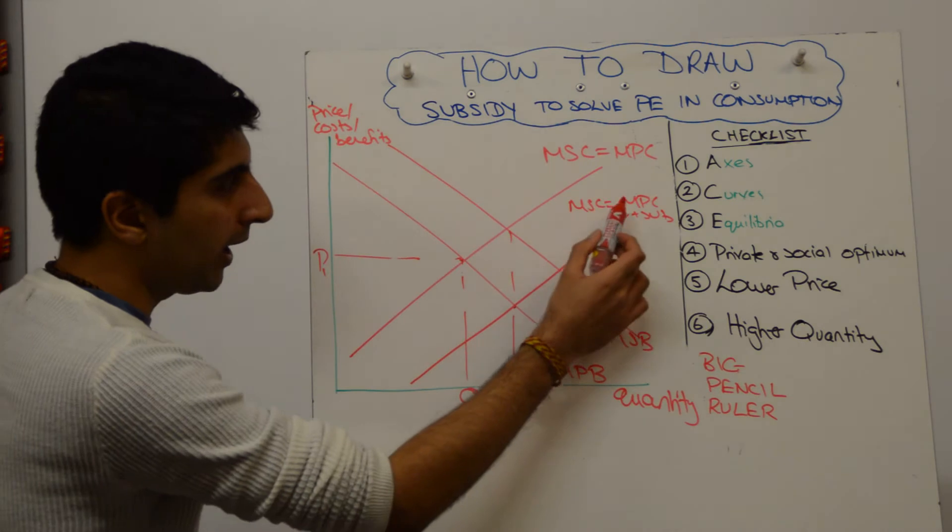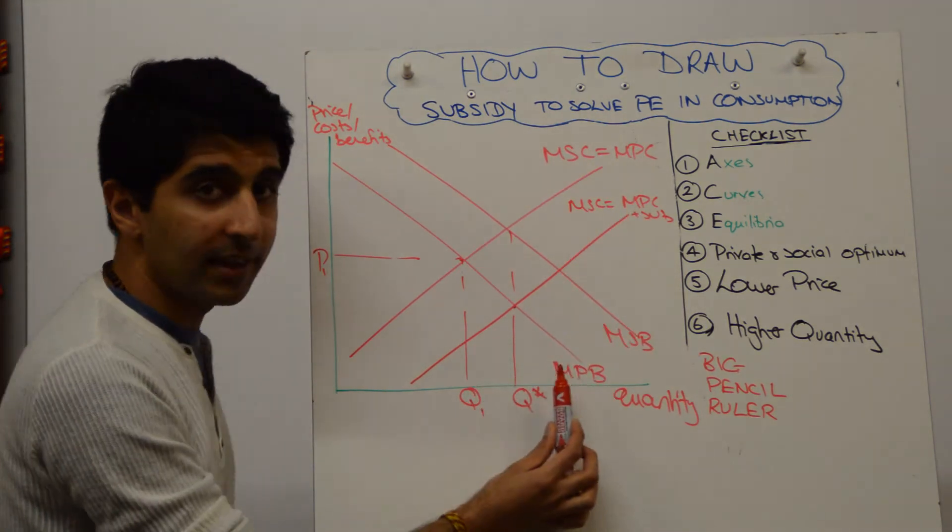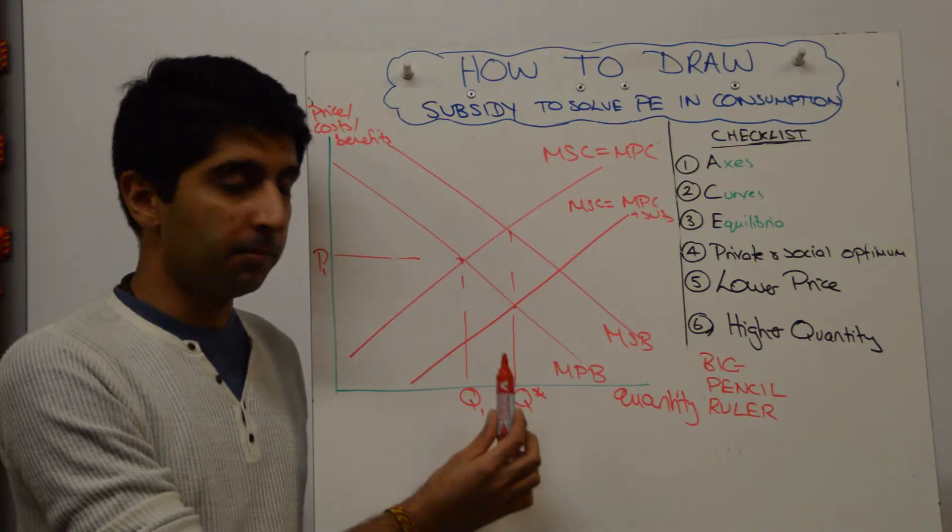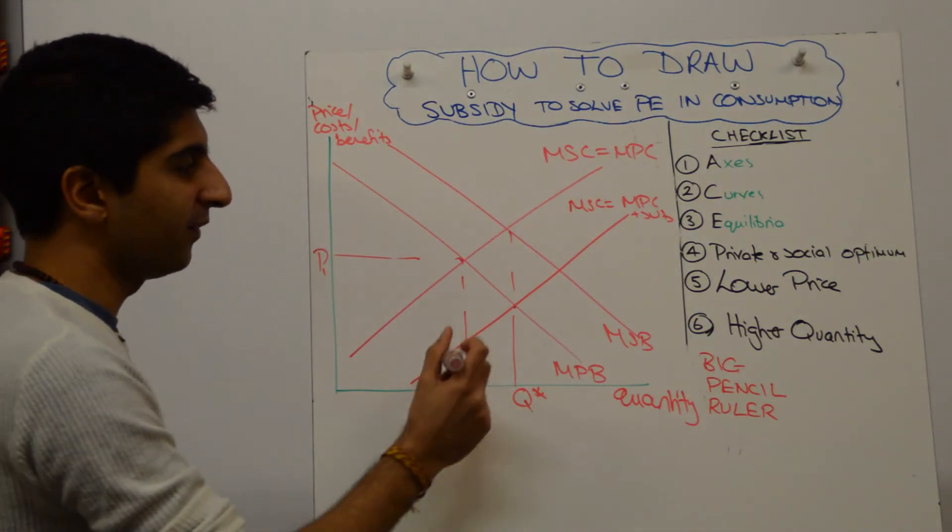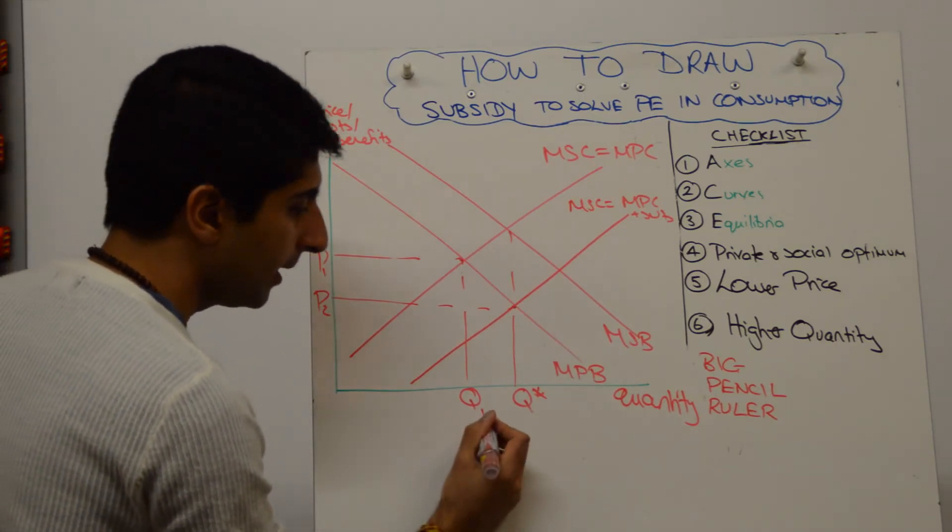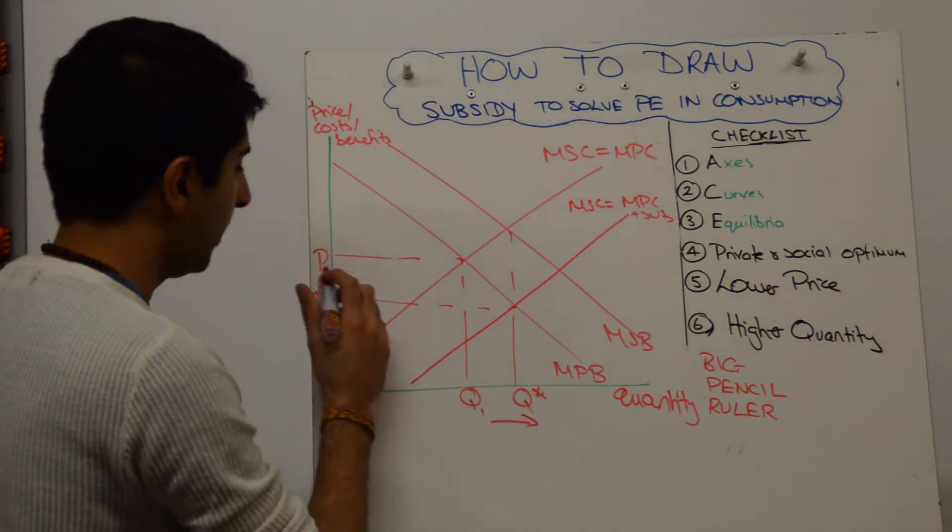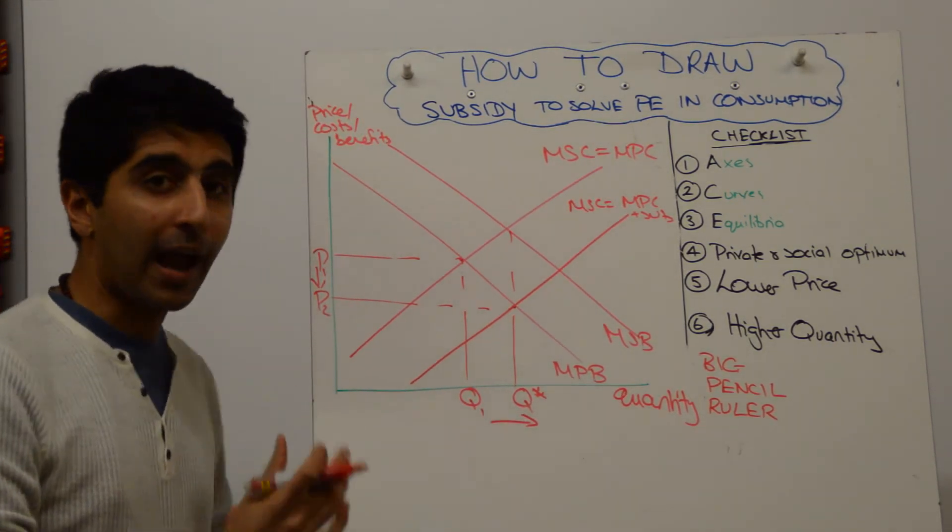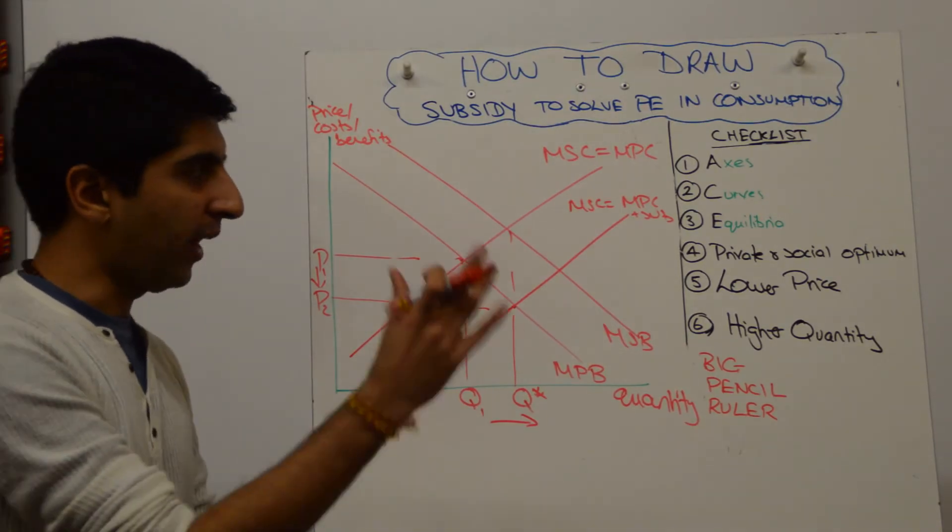What does it mean? Well, where the MPC cuts the MPB now is at the socially optimum level. So the market is now working efficiently, and we have a lower price as well. To make it clear that quantity and price have changed, use arrows. That's the diagram.